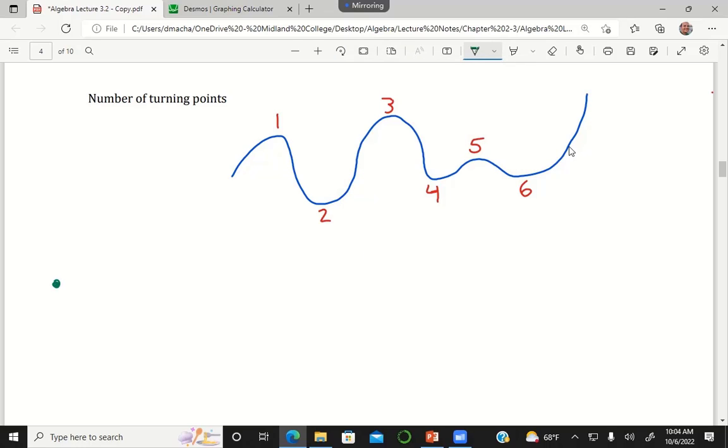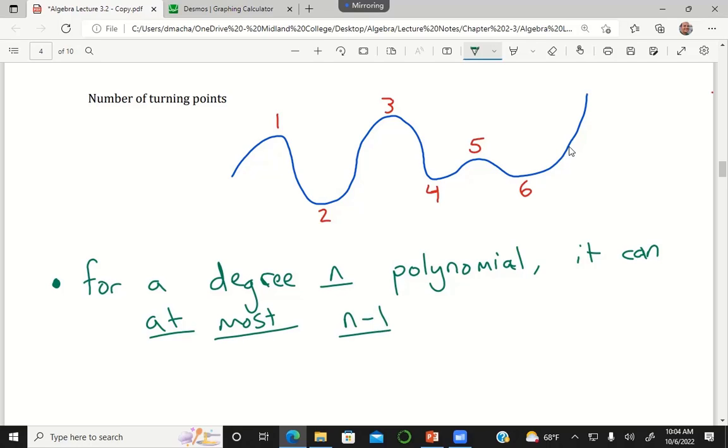But there's three facts I want you to know about the number of turning points. Number one is for a degree n polynomial, it can have at most n minus one turning points.